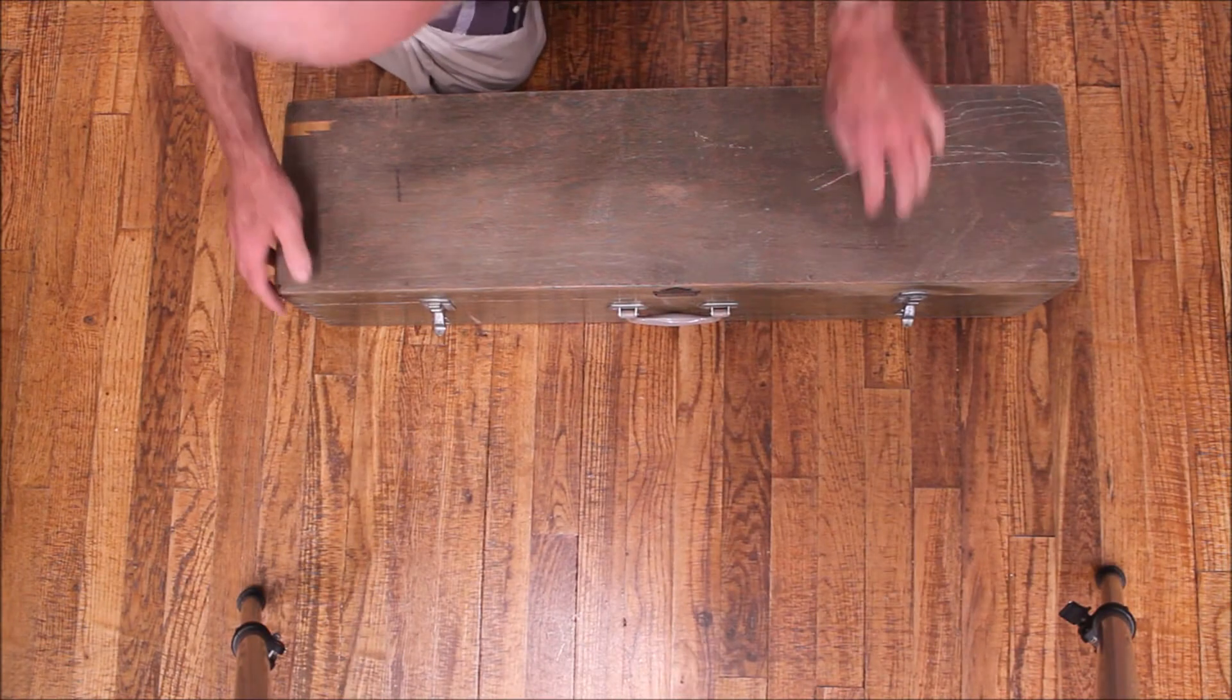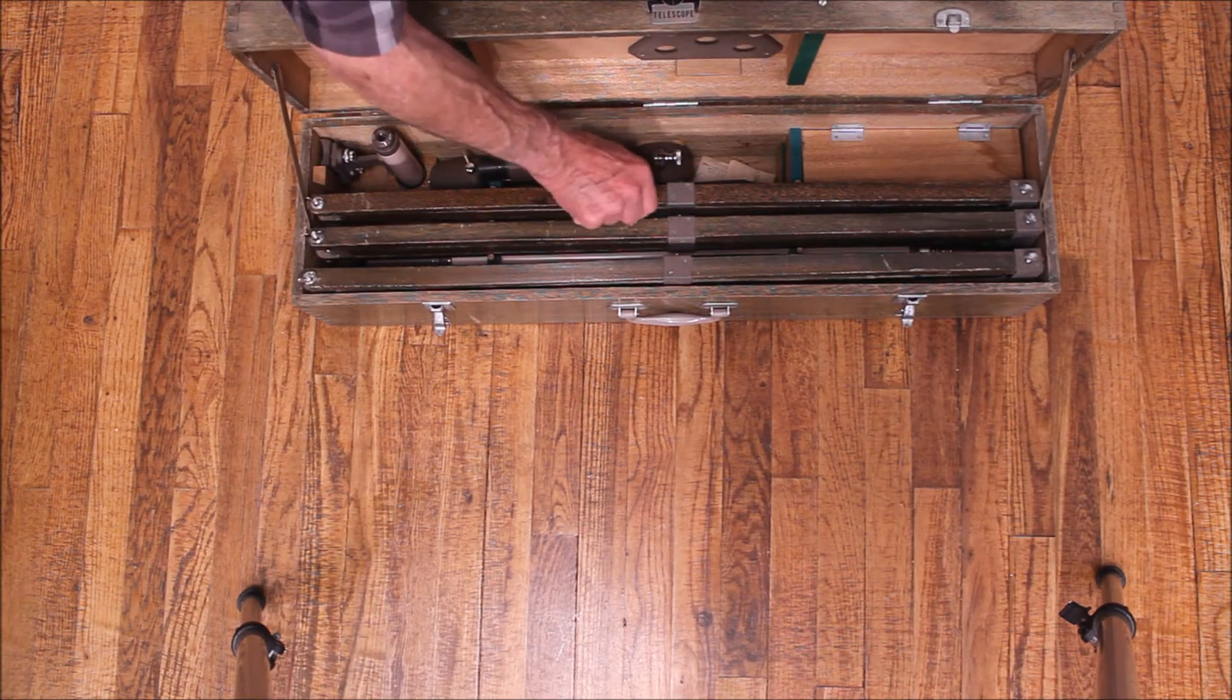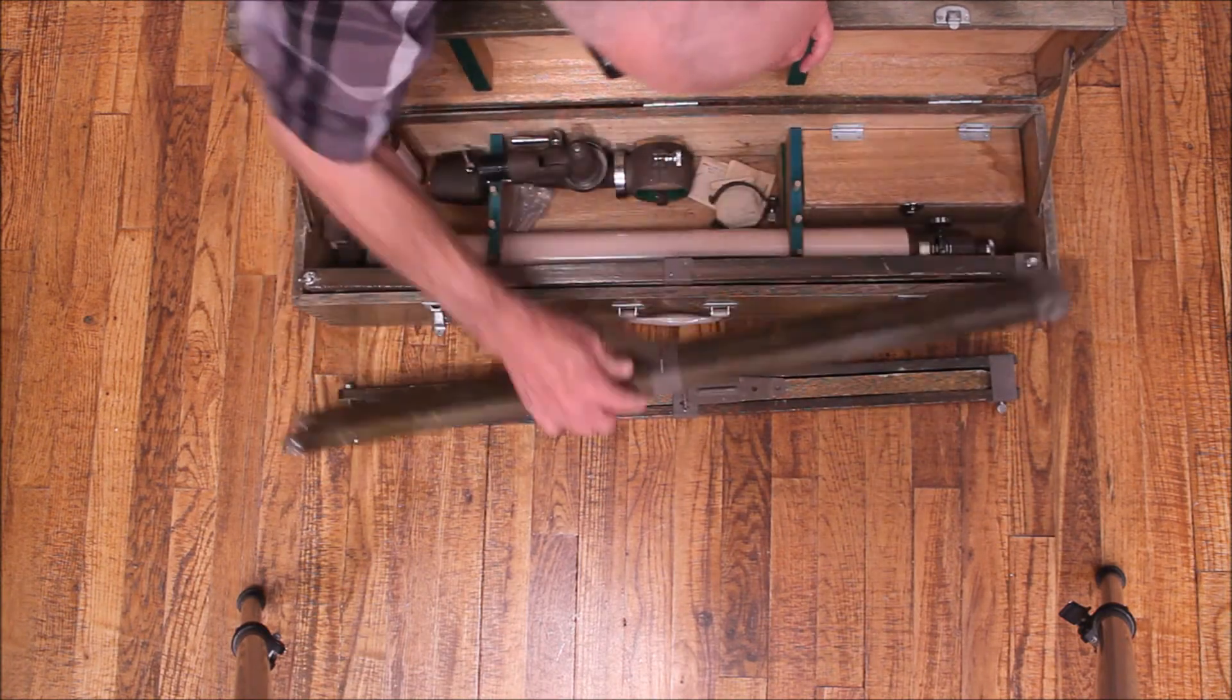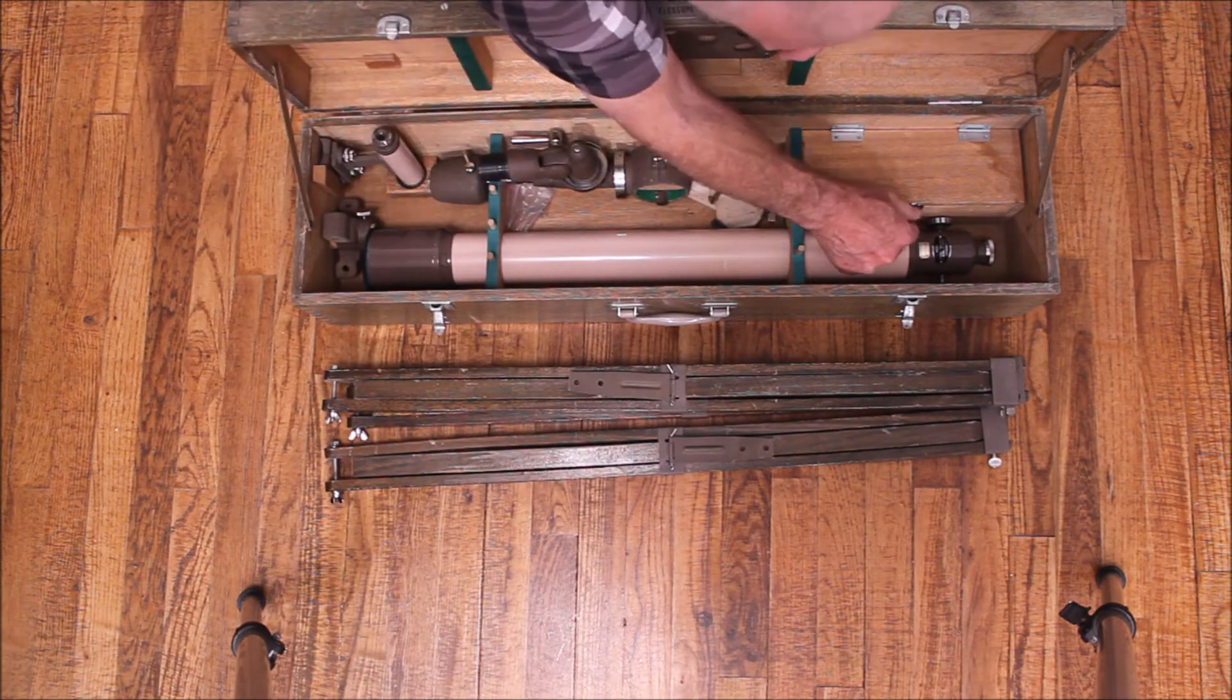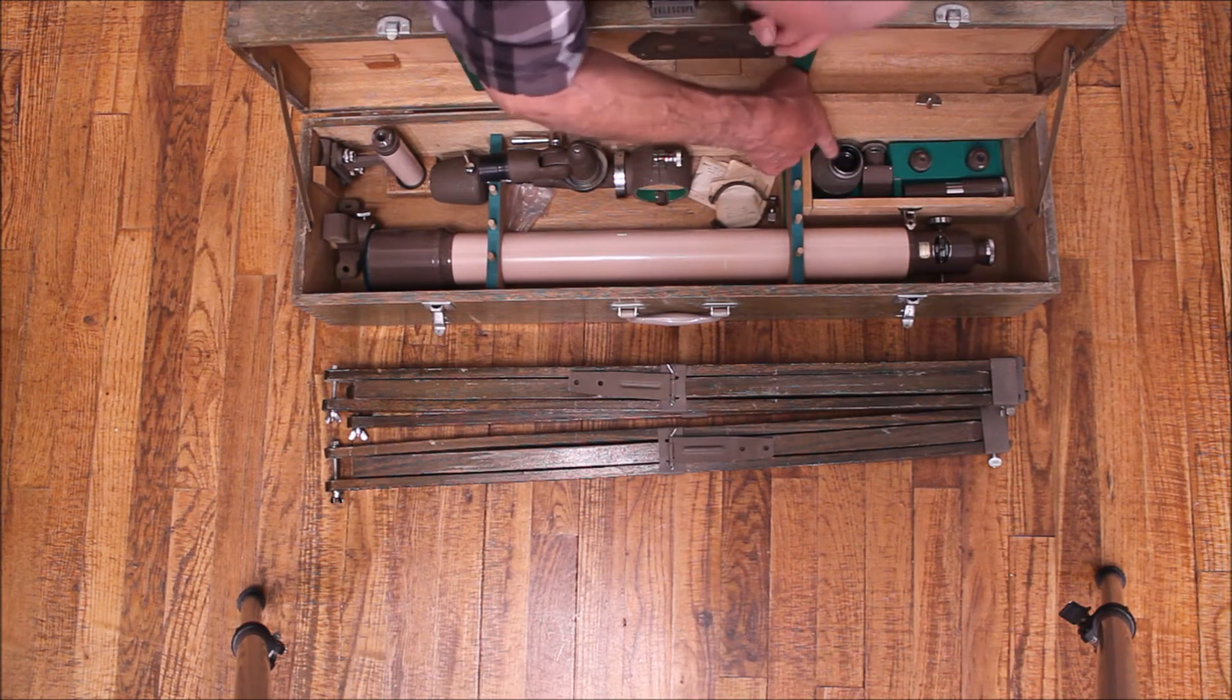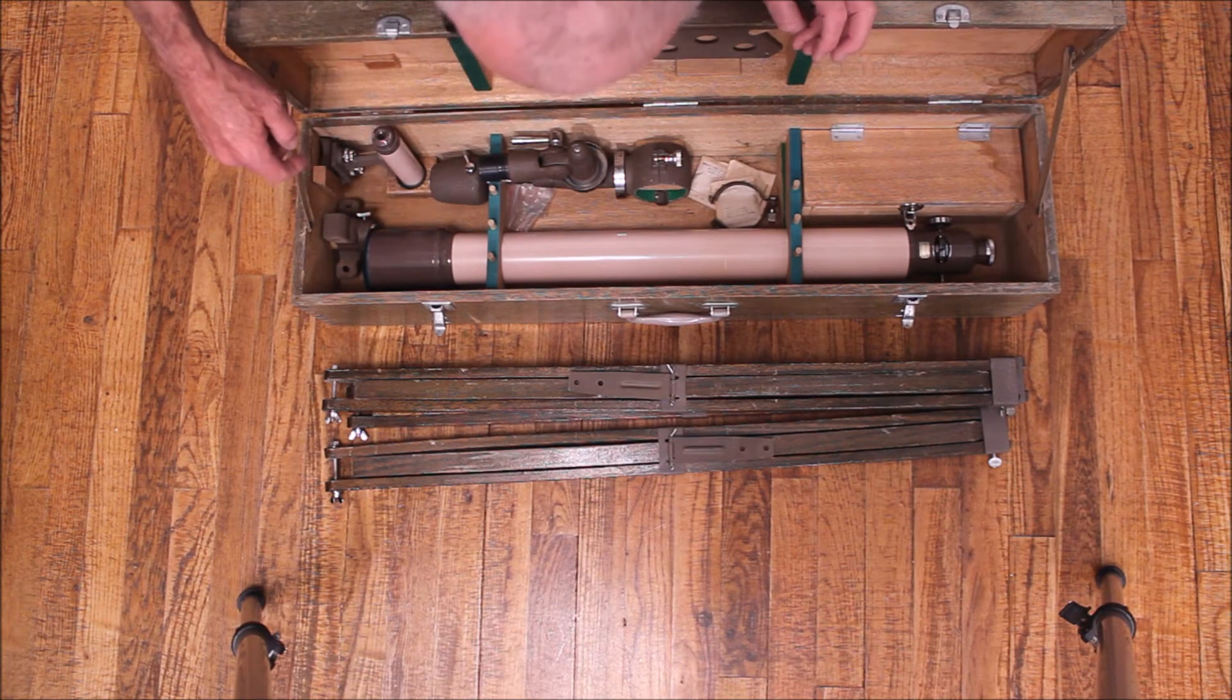This is the packing scheme. The little swift 60 millimeter scope. The legs are packed in here. The top. And then there's a box inside here with eyepieces, barlow, pearl prism.